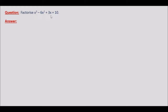Let f of x be equal to x cubed minus 6x squared plus 3x plus 10. Now we will be splitting this cubic polynomial into two factors — one will be a linear polynomial and the other one will be a quadratic polynomial. We will be first finding the linear polynomial using the factor theorem.